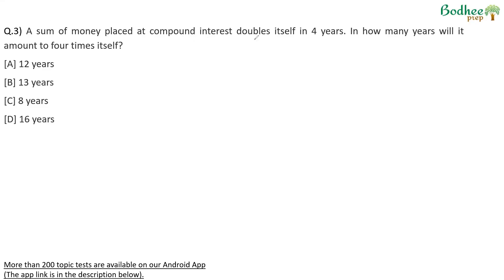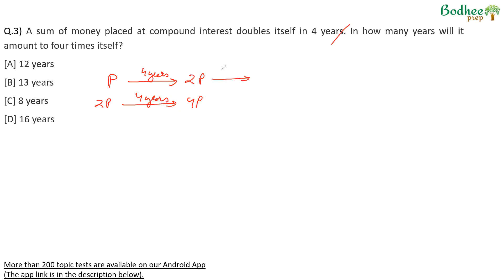Question three: a sum of money placed at compound interest doubles itself in four years. So if we start with principal P, in four years it becomes 2P. In how many years will it amount to four times itself? If we start with 2P, in the next four years it becomes 4P. So starting with P: after 4 years it's 2P, and after another 4 years, 2P doubles to become 4P. From P to 4P, the total time taken is 4 + 4 = 8 years.